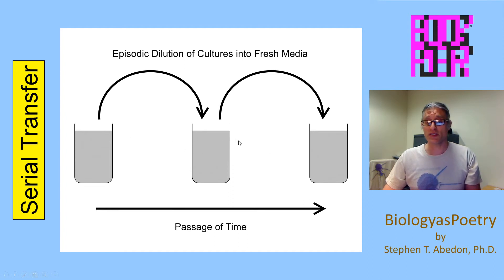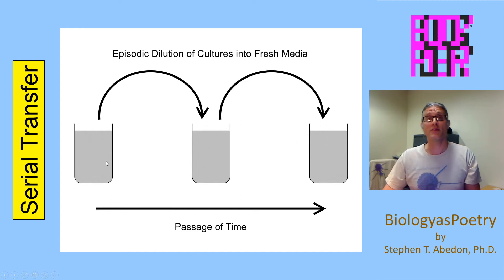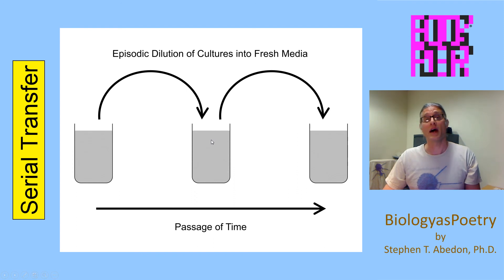If you do this enough times, the organisms will become better adapted to the environment they're in. If the environment is sufficiently novel to begin with, the organisms will display a relatively high rate of adaptation, and then with time, the rate of adaptation typically will slow down.